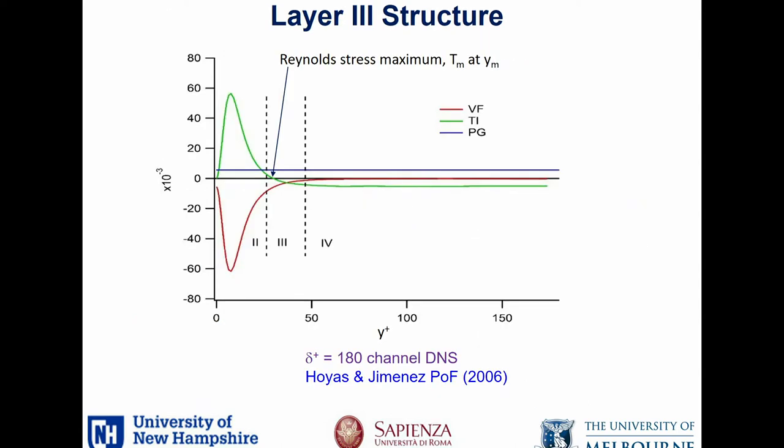Let's look at this first at low Reynolds number, so you can actually see the pressure gradient term — because remember, it's one over the Reynolds number. The green curve is our turbulent inertia, the red curve is the viscous force, and the pressure gradient, which is constant everywhere, is the blue curve. You can see in layer two we have dominance of the viscous force and turbulent inertia. But as we approach layer three, they both become small. In fact, the turbulent inertia crosses zero because the Reynolds stress itself goes to its peak.